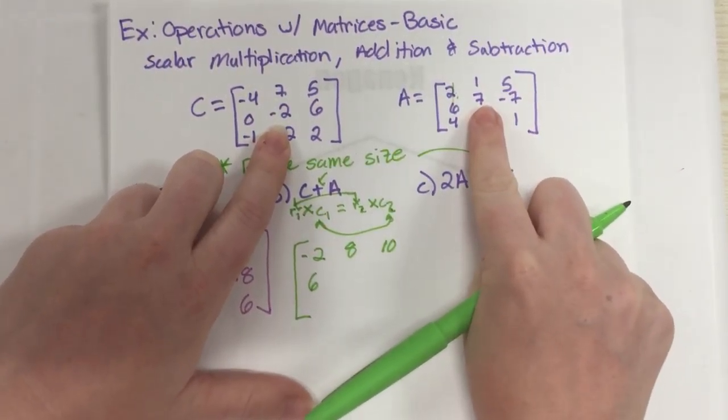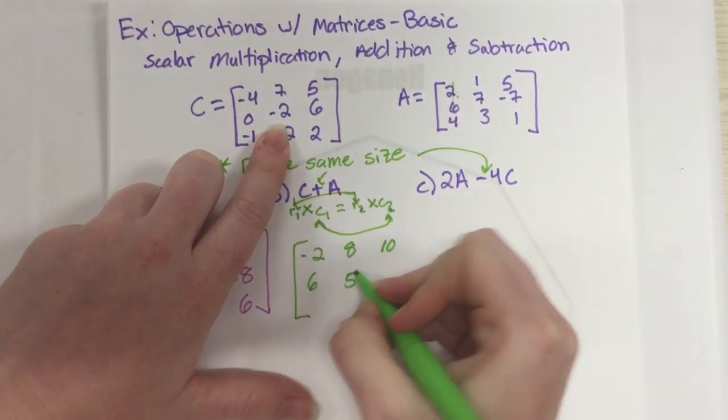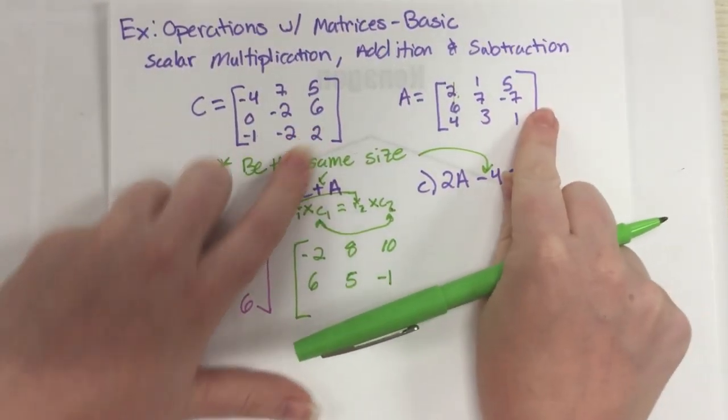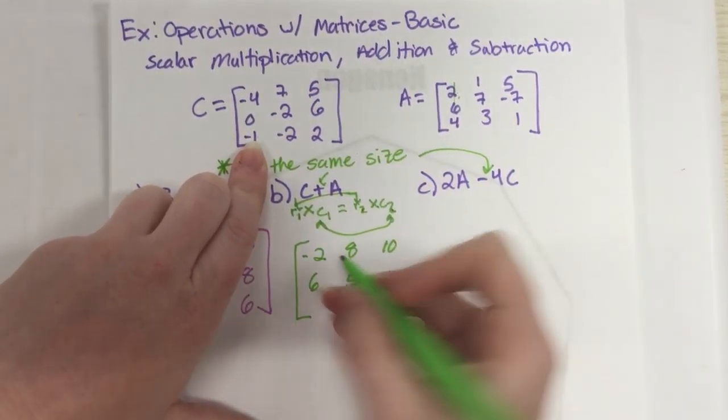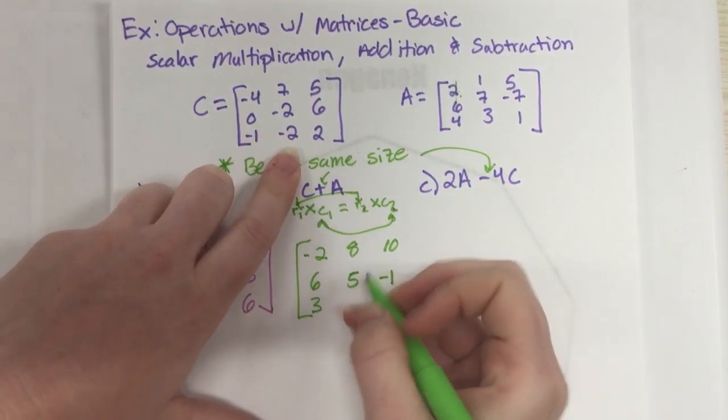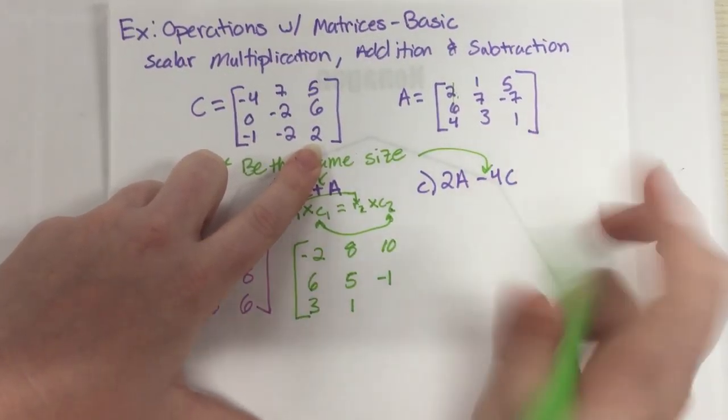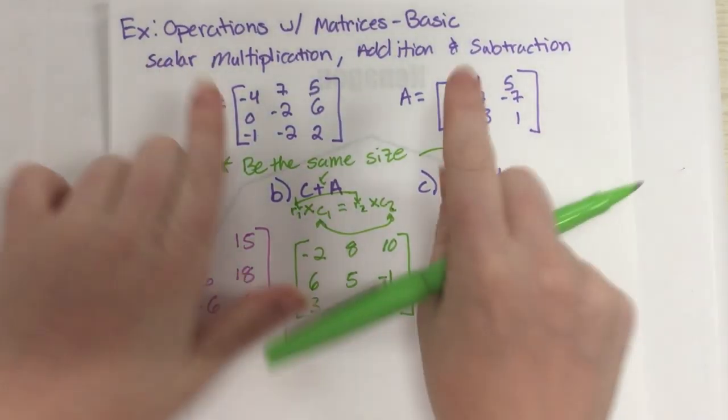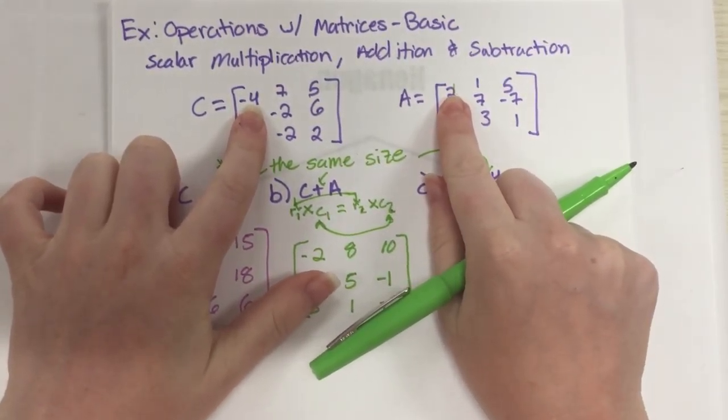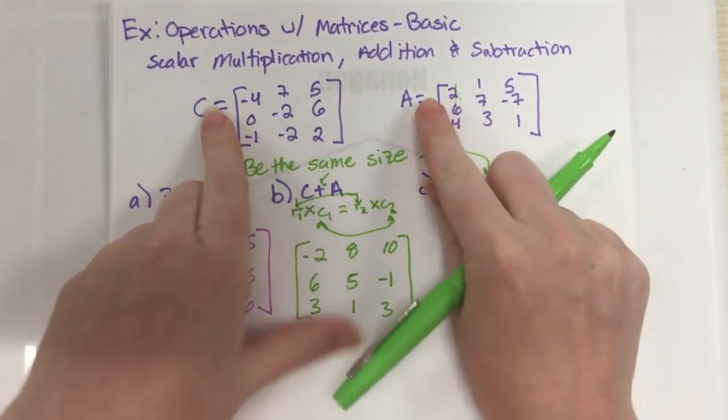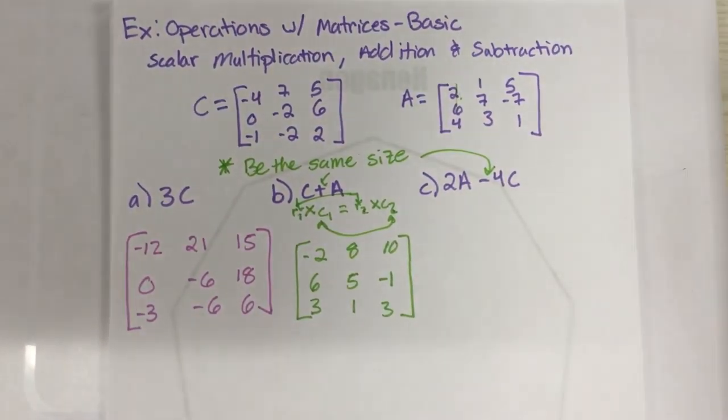Negative 2 plus 7 is 5. Or 6 minus 7 is negative 1. Negative 1 plus 4 is going to be 3. And then we got a positive 1. And then we have a positive 3. So when you're adding or subtracting, you just line up the column and the row, add those numbers, and just work your way. You can work your way down by columns, or you can go across by rows. It doesn't really matter.